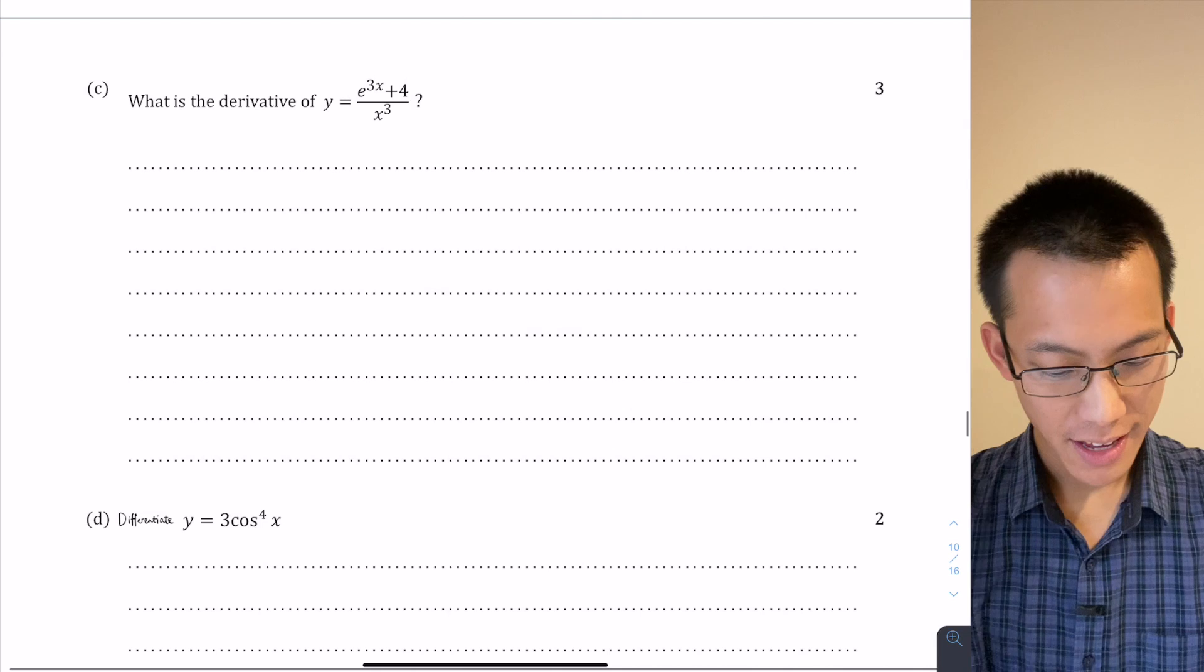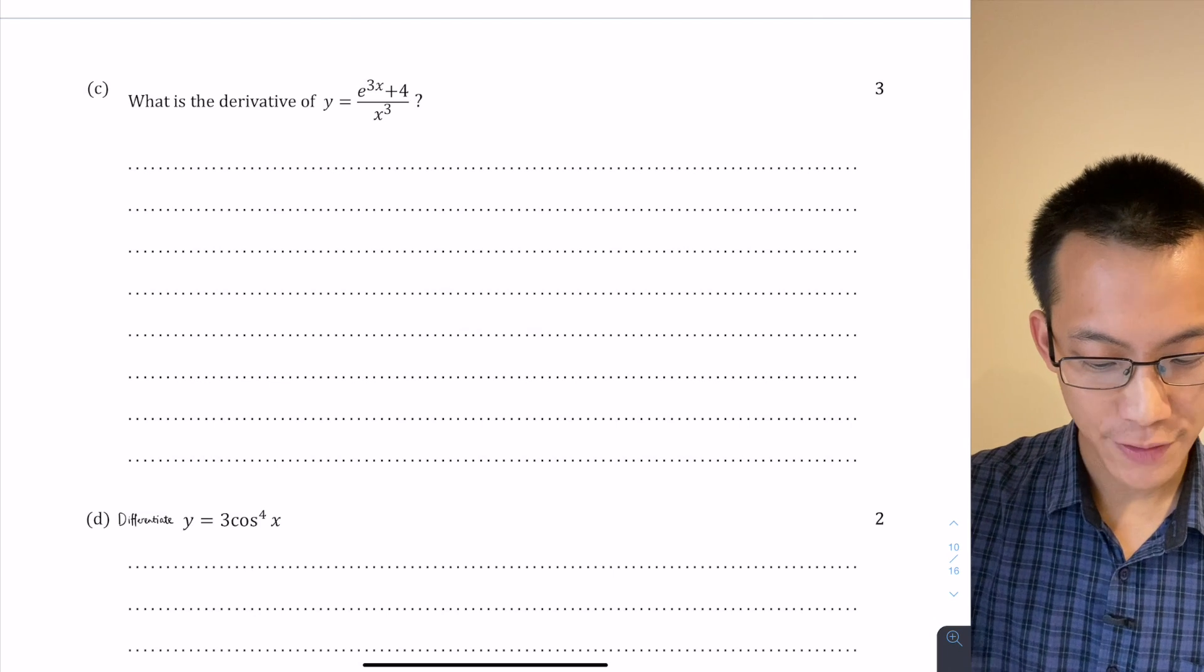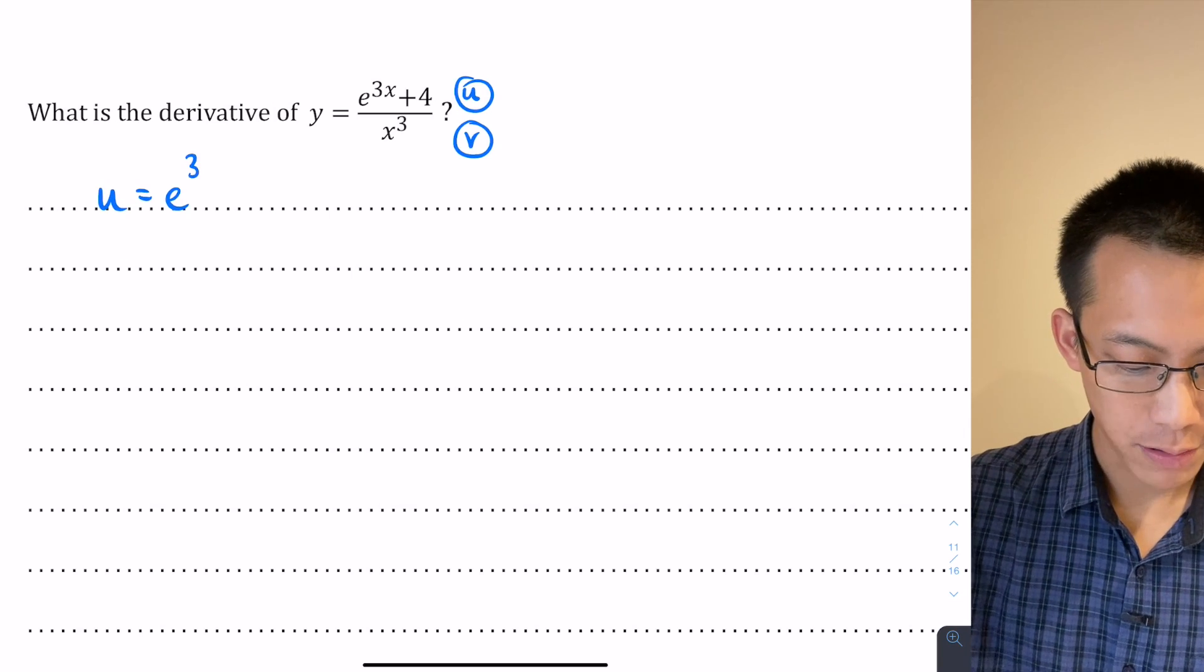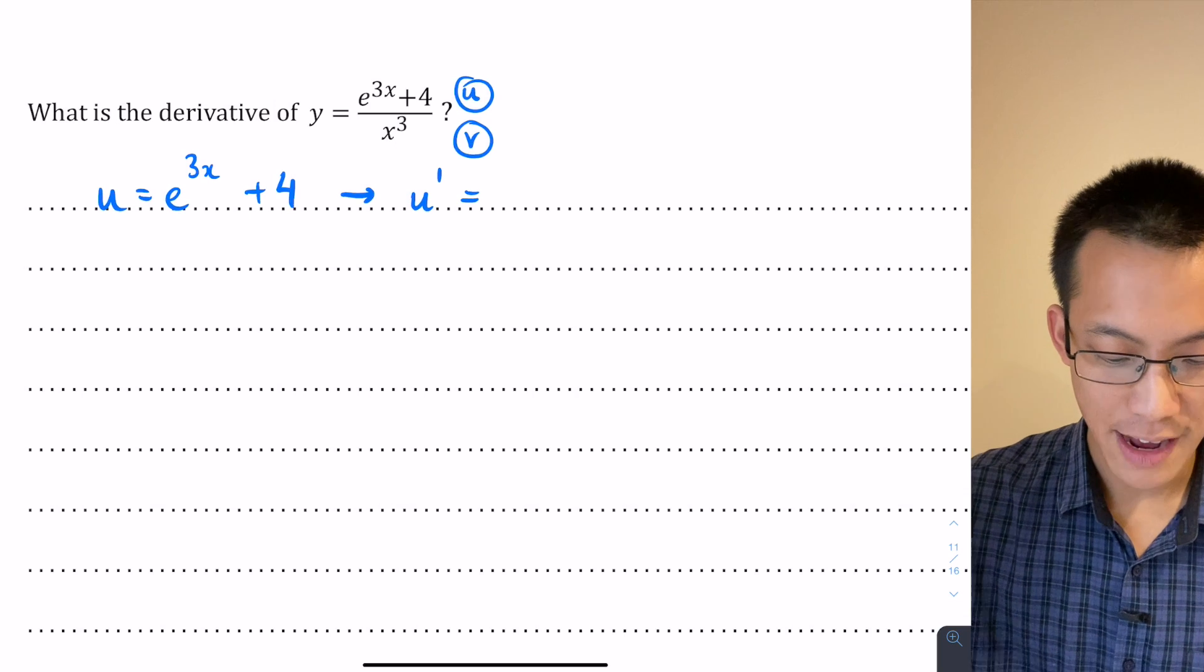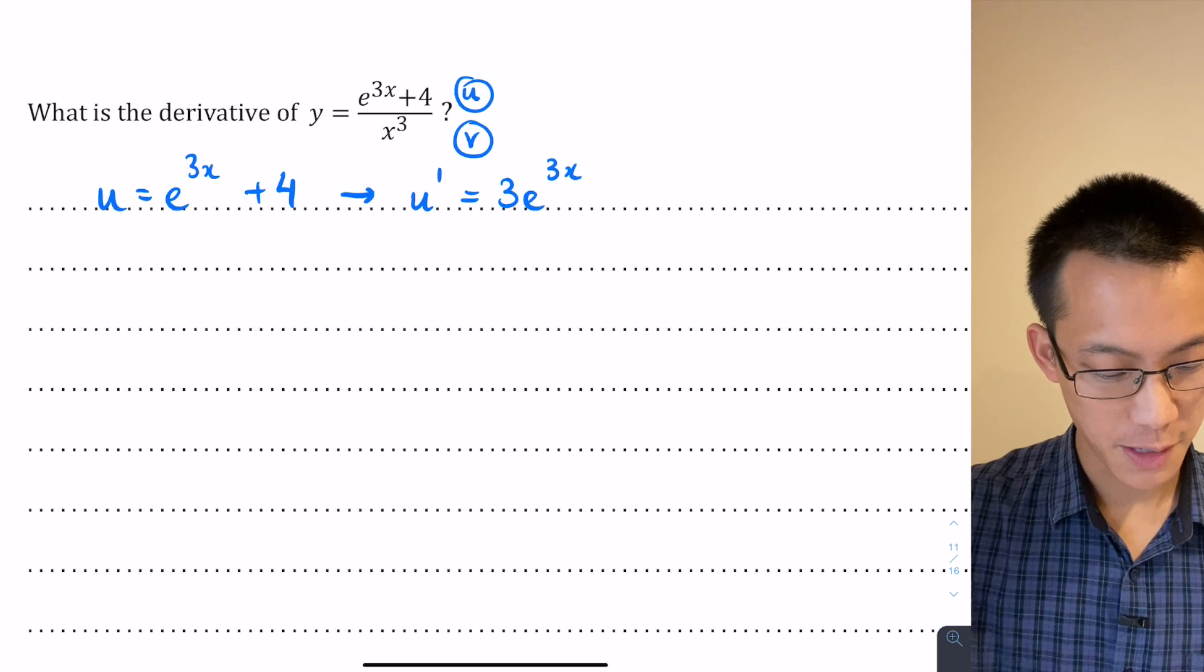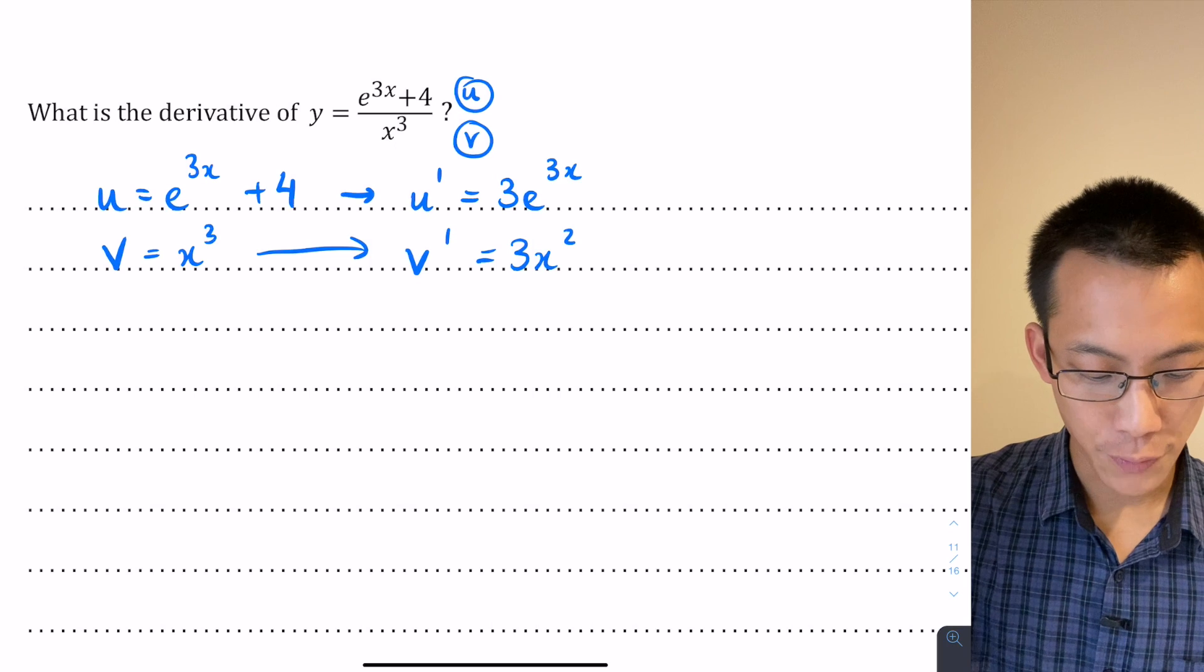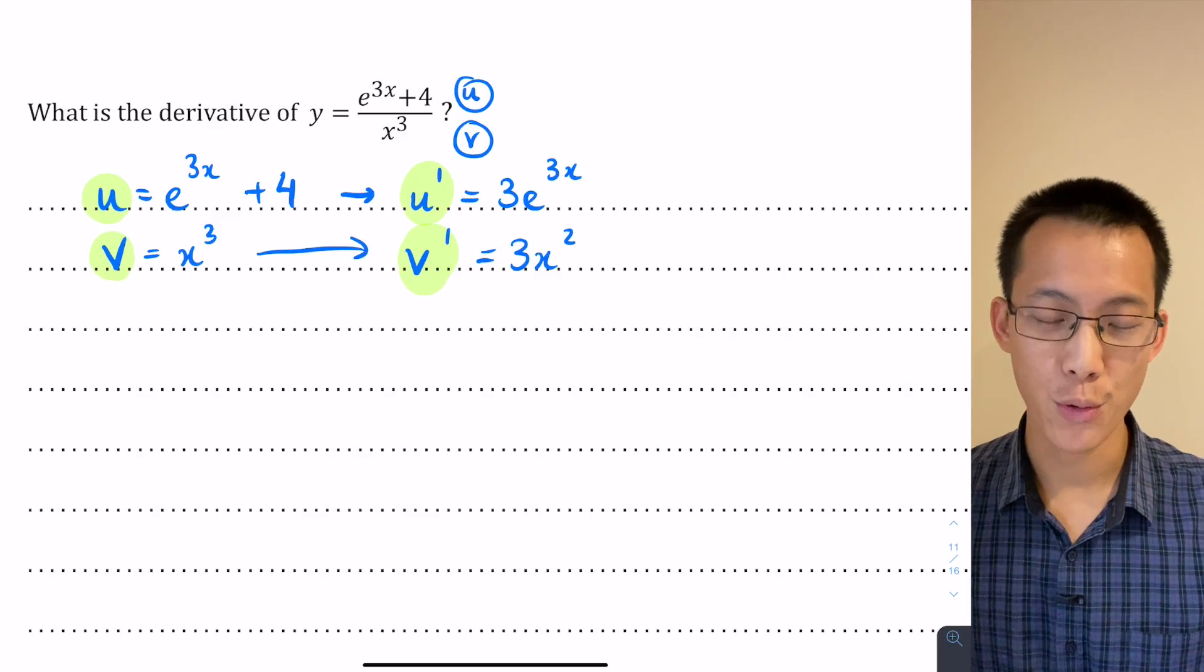Let's have a look at part C. What's the derivative of e to the 3x plus 4 on x cubed? So there's a quotient here and we have to deal with it using the quotient rule. I'm going to call this guy u and this guy v. So if I write u equals e to the 3x plus 4, then what that tells me is that the derivative of u or u dash is going to be equal to 3e to the 3x and that plus 4 differentiates and disappears. If v is equal to x cubed, then that tells me that its derivative v dash is equal to 3x squared. And these four pieces here, u, v, u dash, and v dash, they're going to be what I use to assemble my quotient rule.